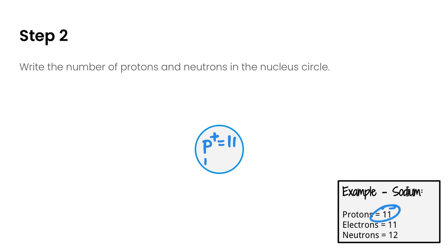For the number of neutrons, we write a lowercase n with a superscript zero, which emphasizes that a neutron has no charge or zero charge, and that equals 12 as we calculated. Both of those go in the nucleus of our atom.